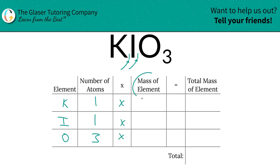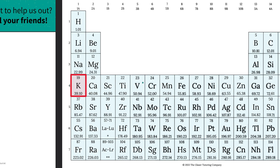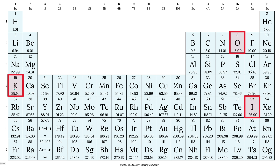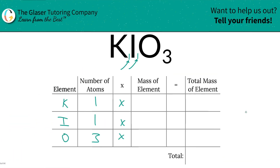Then all we're going to do is simply multiply those number of atoms by the mass of each element. Those masses are found on the periodic table. So take a look: potassium is 39.10, oxygen is 16, iodine is 126.90. So let's write them on in: potassium is 39.10, iodine is 126.90, and oxygen is 16.